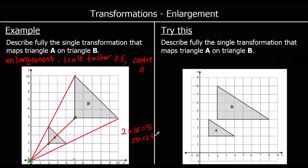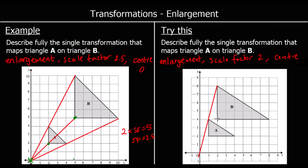Here's one for you to try: describe the transformation that maps triangle A onto triangle B. We can see it's an enlargement — the shape has got bigger. So the first bit of information is enlargement. We need a scale factor: it was three along and now it's six along; it was two up, now it's four up. It's doubled, multiplied by two. Scale factor two. And the center of enlargement — we can join up the points, and it's going to be the origin again. So the center is at the origin. It was one across two up; if we double that, two across four up to the same point on the other shape.